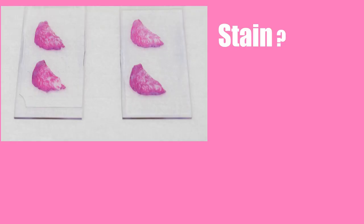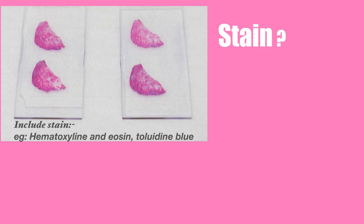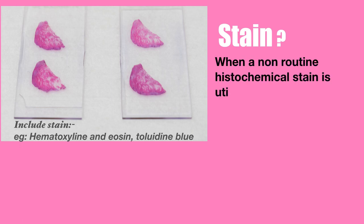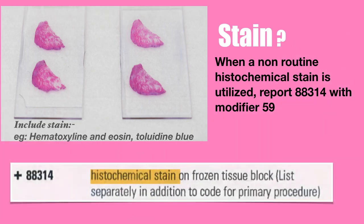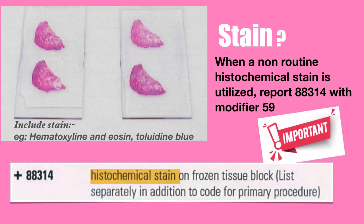The next scenario involves staining. The routine stains for Mohs surgery are hematoxylin and eosin, and toluidine blue — these are inclusive in this surgery. When the surgeon uses non-routine stains, the stain is billed separately with code 88314 along with modifier 59 with the Mohs surgery code. This is also an important point.